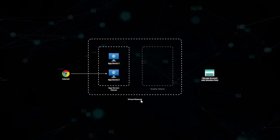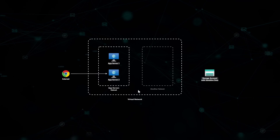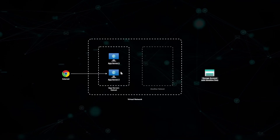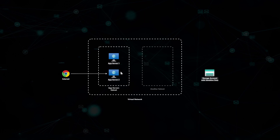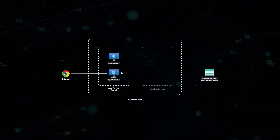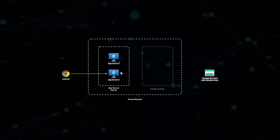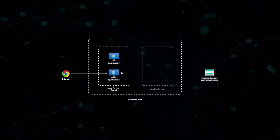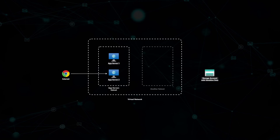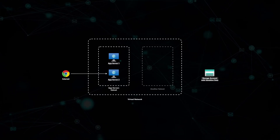We have a virtual network. Inside of that virtual network we have two subnets, and one of those subnets contains two app servers. Users from the public internet can access these app servers. Let's imagine a scenario where a malicious user gains access to app server 2. If that happens, it increases the ability that user has to gain access to other Azure resources.